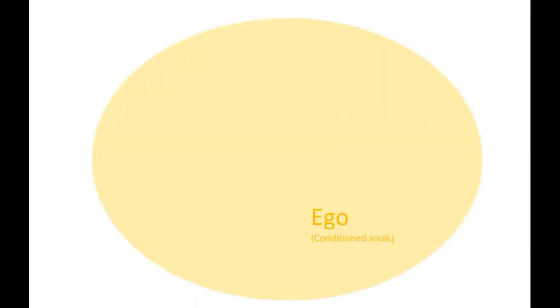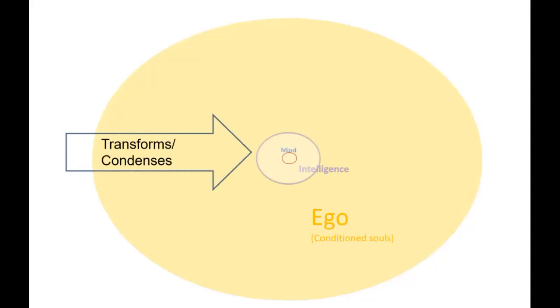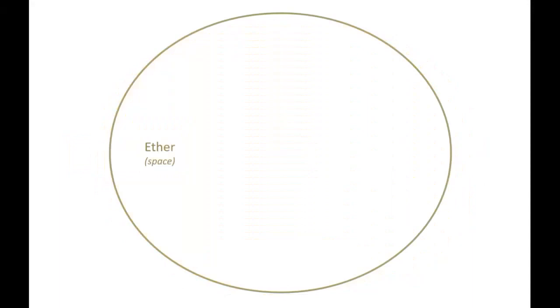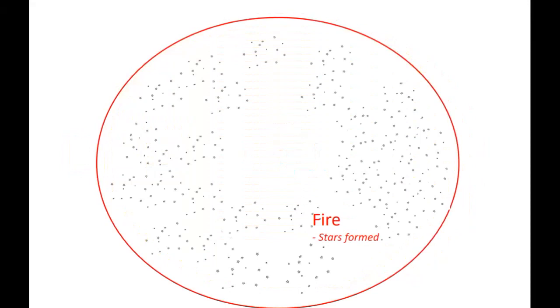Through various subtle and gross elemental interactions, the layer of ego condenses into intelligence, which then condenses into mind, then into the gross elements: ether, air, fire, water, and finally earth.